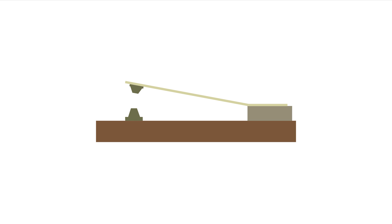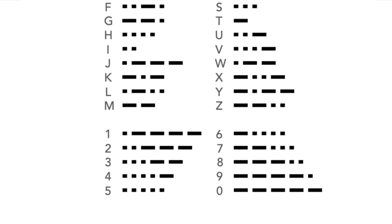Morse code keys or turns a signal on and off — it's this simplicity that gives it many advantages. Each character is made up of a series of long or short on periods, which can be built up to make characters and then messages.